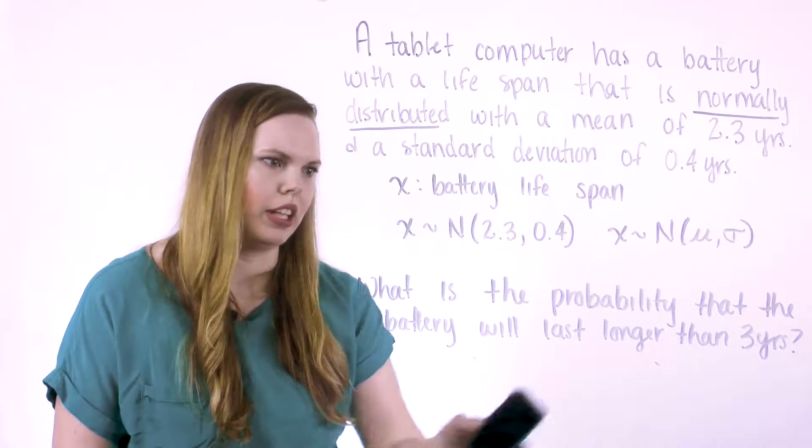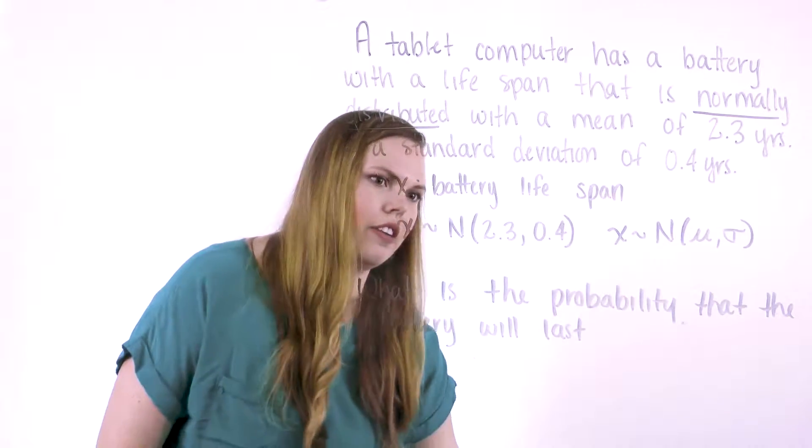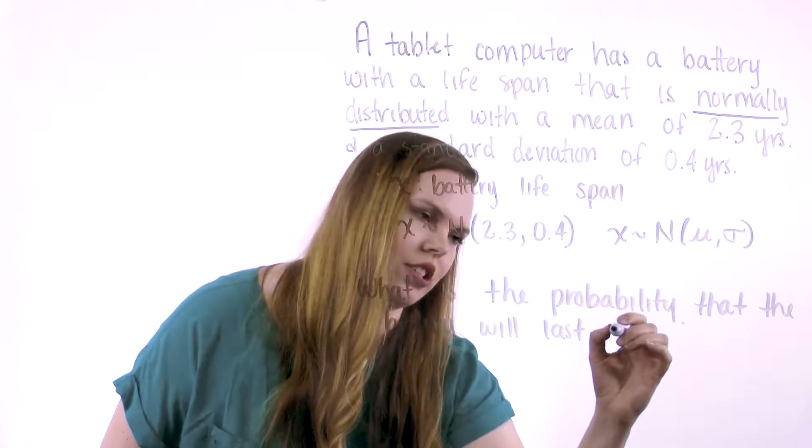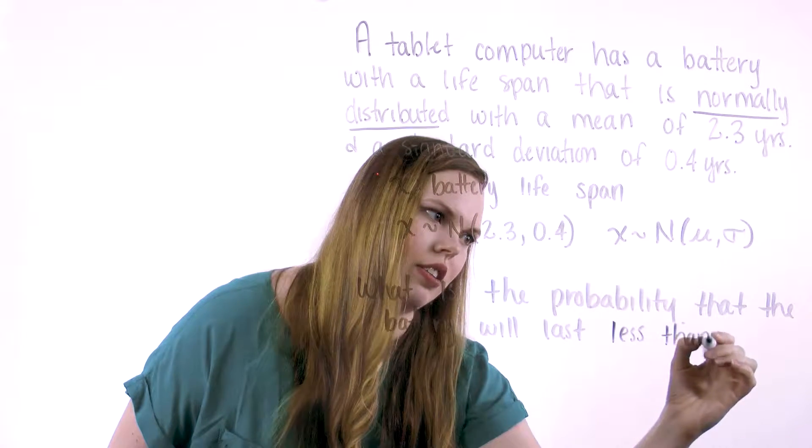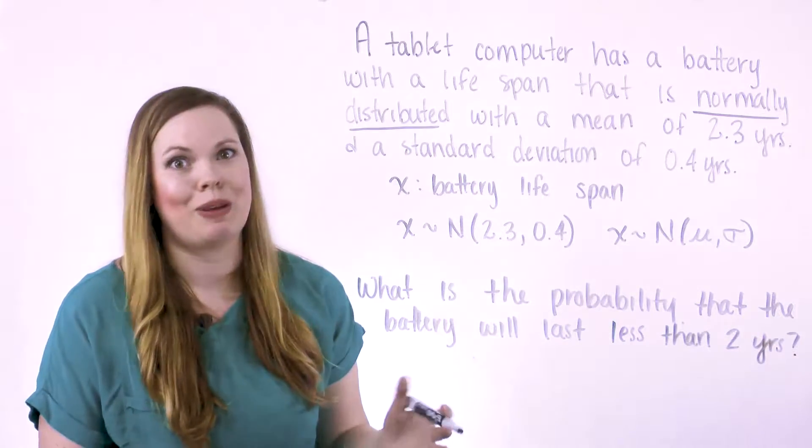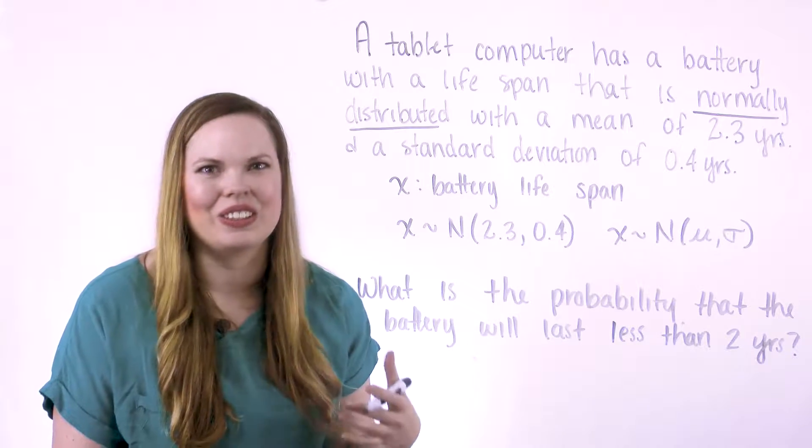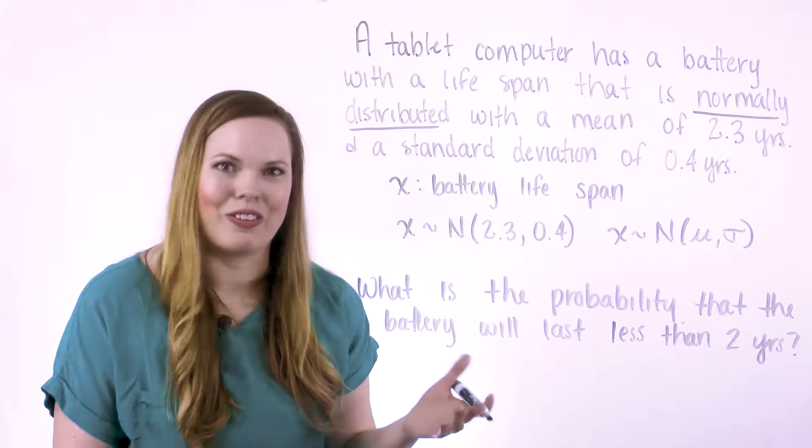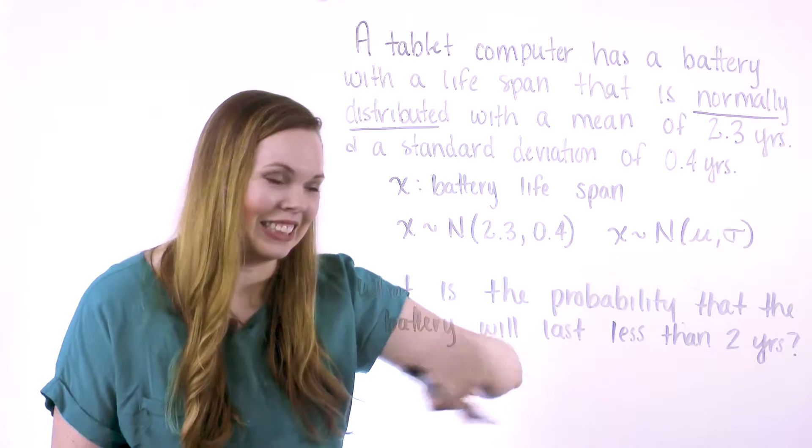Let's do another quick problem. What if we want the probability that our battery is going to fail or last shorter than 2 years, or less than 2 years? So I'll do 2 years. I want it, maybe I want it to make sure that it's going to last at least 2 years. So what's the probability that it's not going to do that? And we of course want that to be pretty low.